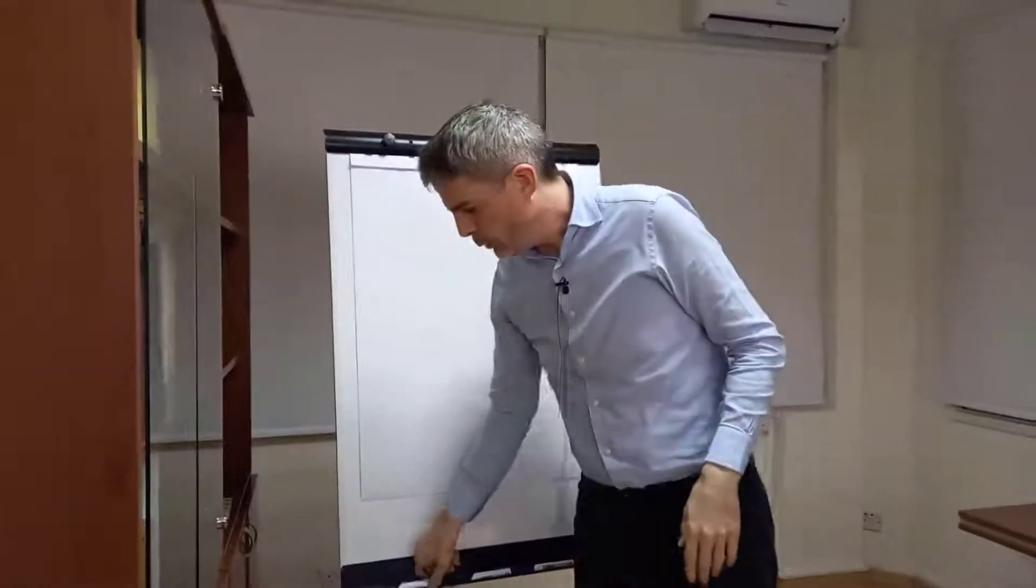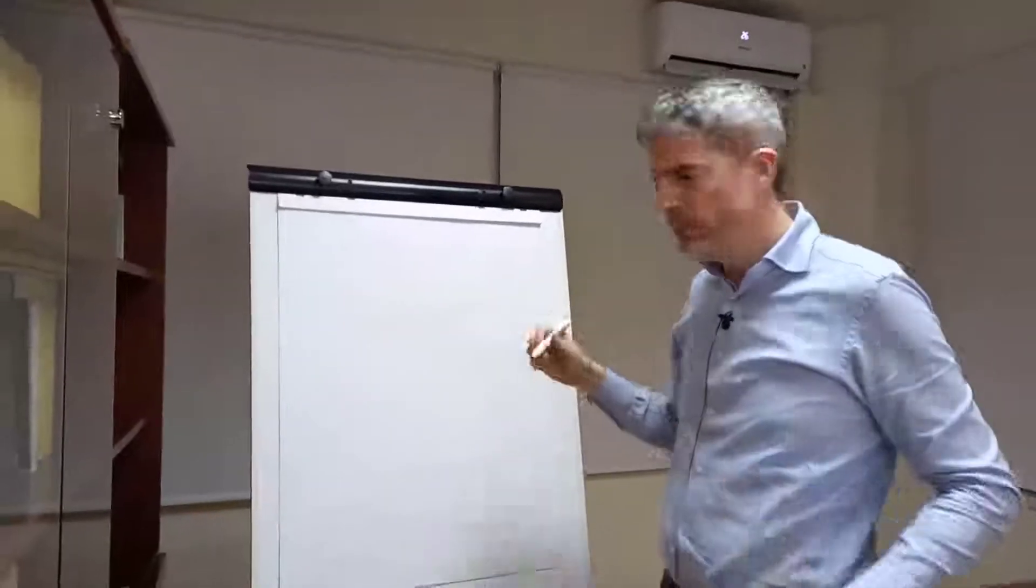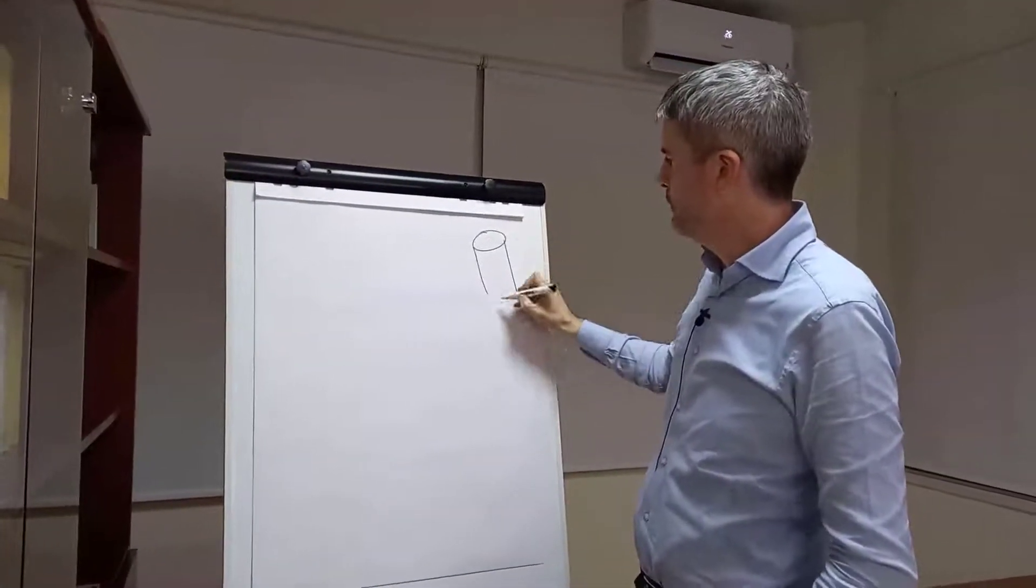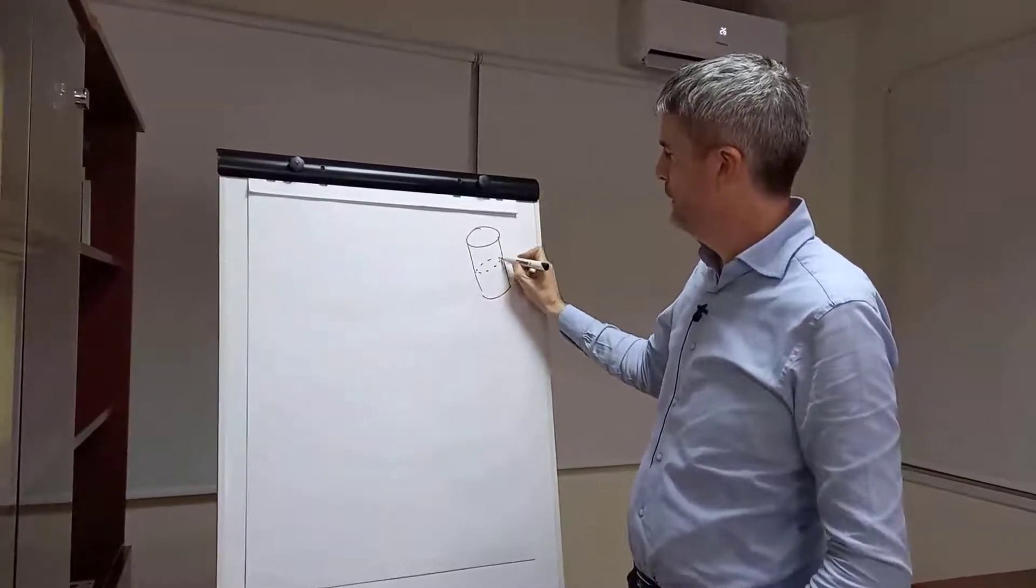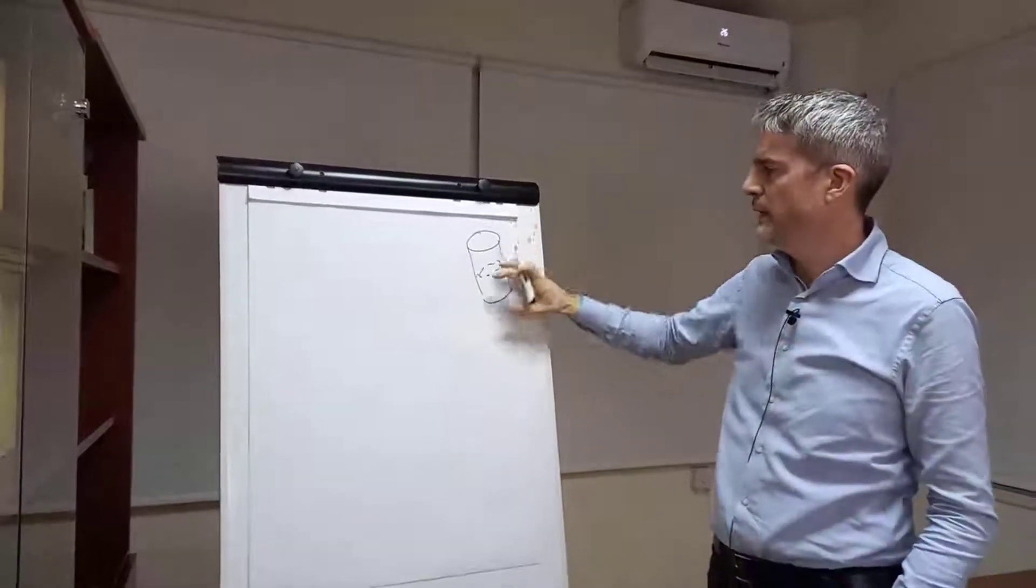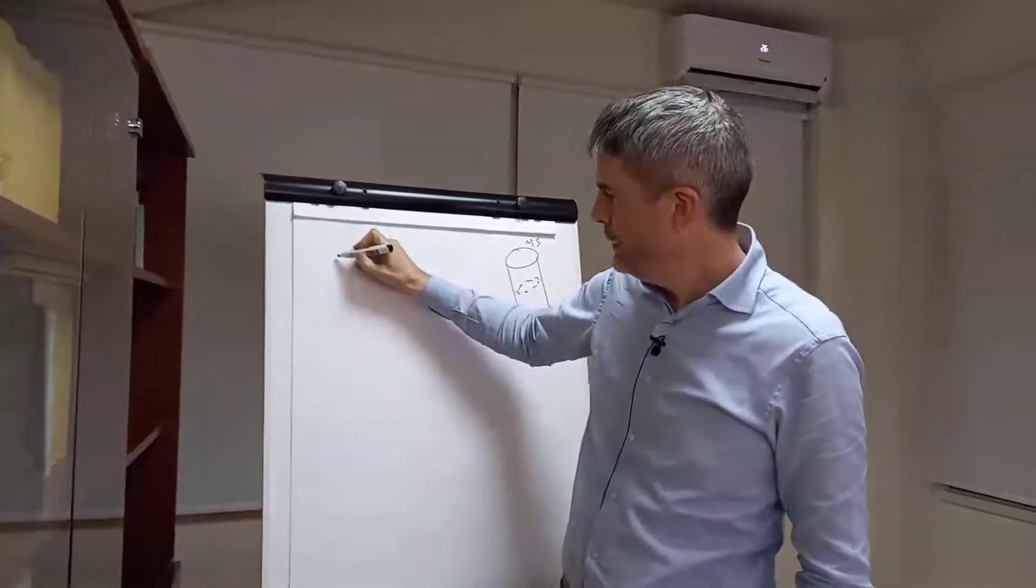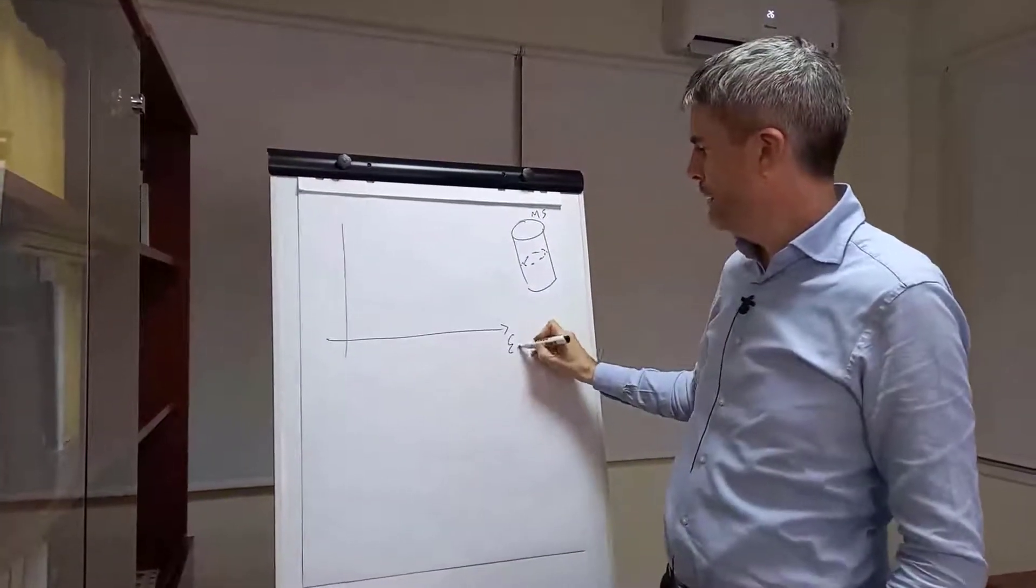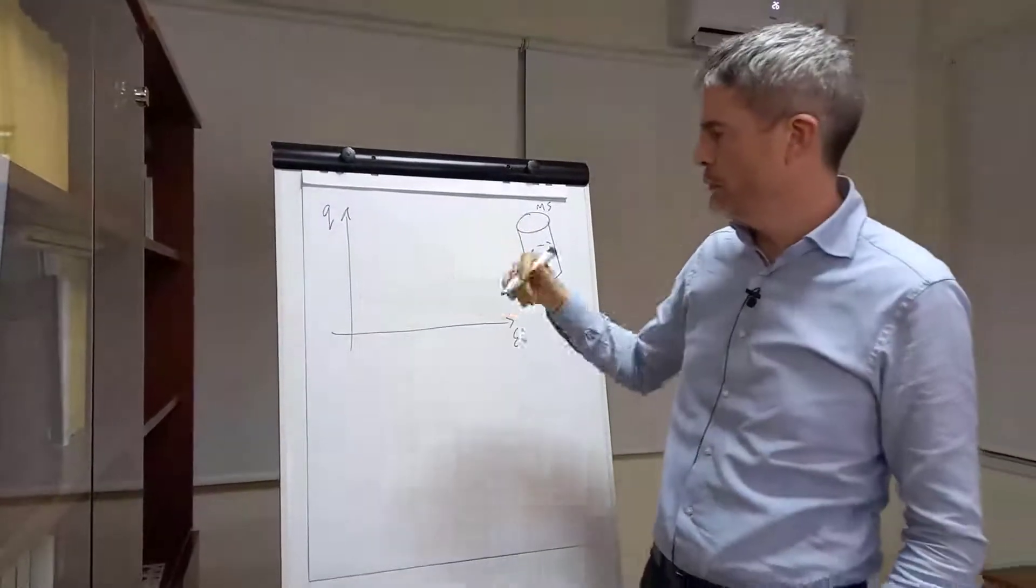So, when we test in the large triaxial that we saw before, we have a cylindrical specimen like that, and in the middle we have a geogrid layer like that. So, we're testing the material as a composite, as a mechanically stabilized material. When we do a triaxial test, axial strain against deviatoric stress Q, in the normal way for a triaxial test.